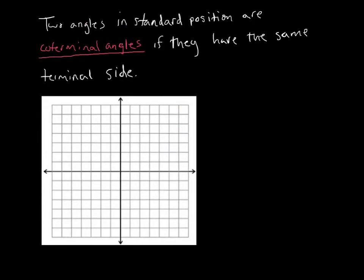Here's our next vocabulary word: coterminal angles. Two angles in standard position are considered coterminal angles if they share the same terminal side. Both angles must be in standard position for this to apply.